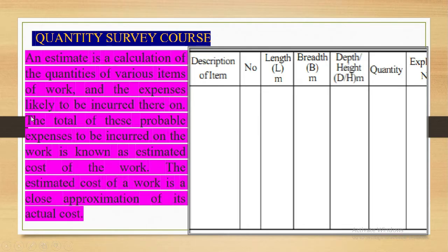And the expenses likely to be incurred thereon, like the extra expenses produced on the project of subcontract. The total of these probable expenses to be incurred on the work is known as estimated cost of the work. The estimated cost of the work is a close approximation of its actual cost. So actual cost will be determined after the completion of the project, but estimated cost is the cost which is forecast by a quantity surveyor.